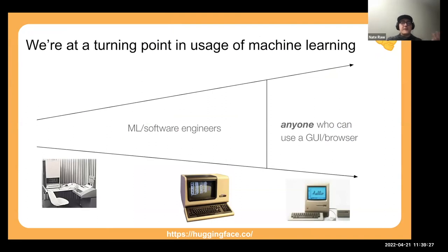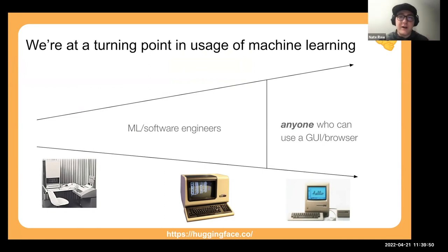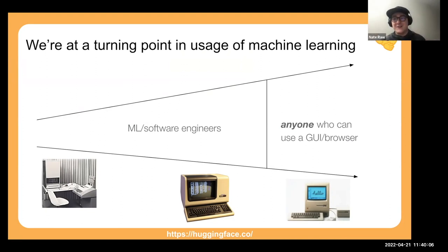We're at a turning point in machine learning. Before, only machine learning hacker types could access state-of-the-art models, but now anybody with a browser can access these models, interface with them, poke and prod them, and identify failure points and biases — which helps us develop better models. Maybe your grandma is the one who figures out that the model doesn't work when you're wearing glasses. Machine learning is becoming as accessible as possible. Now, without further ado, let's do some live programming — here's a Colab notebook link I'll share in the chat.